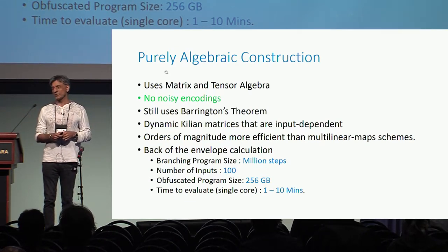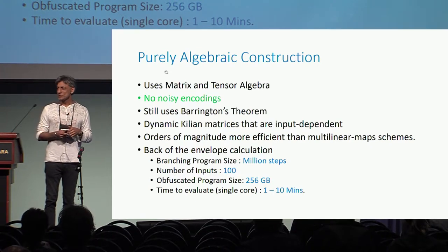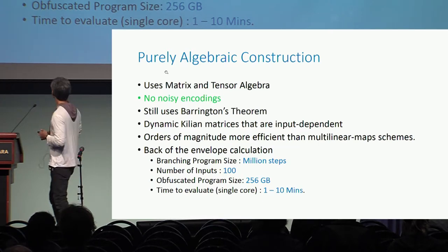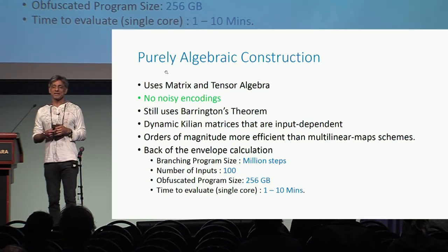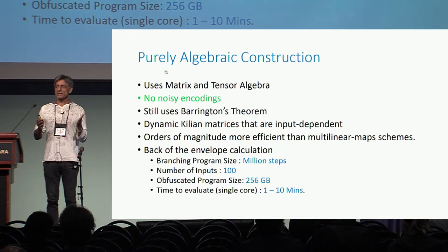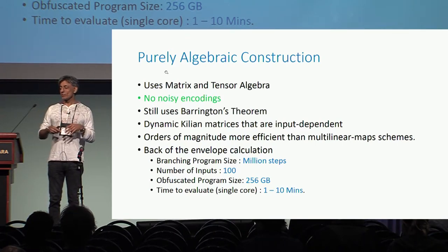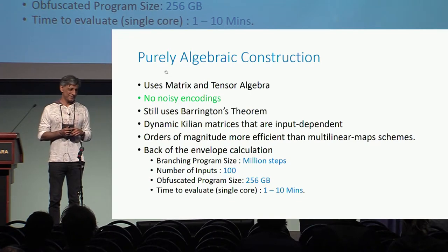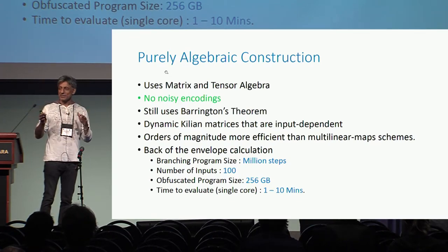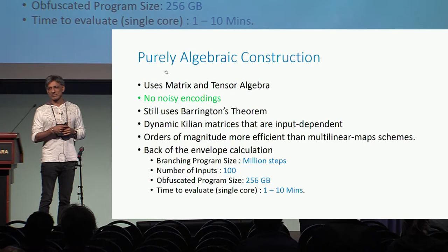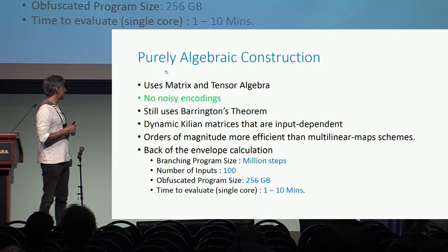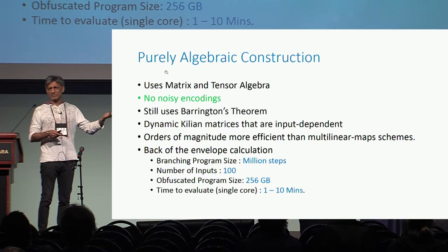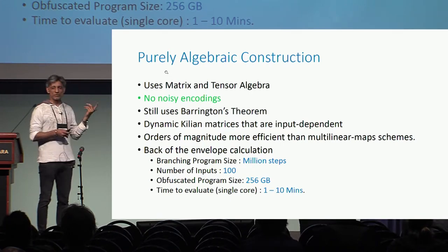We ran some back-of-the-envelope calculations. If you have a branching program with a million steps and the input is 100 bits, your obfuscated program will fit in 256 gigabytes — which nowadays a server will have that kind of RAM, at least. And to evaluate it on a single-core Intel i7, it will just take one to ten minutes.